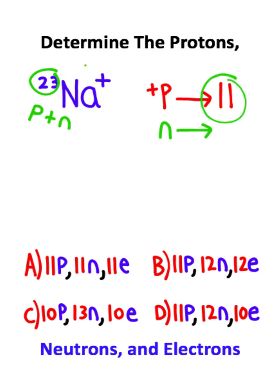As we can see, we have eleven protons, and there's twenty-three protons and neutrons, so that means we must have twelve neutrons, since eleven plus twelve will give us this twenty-three.